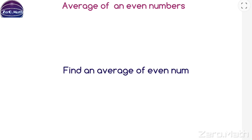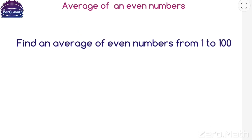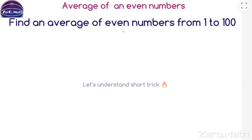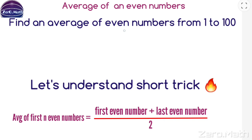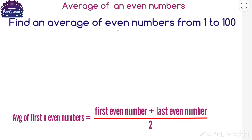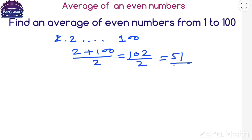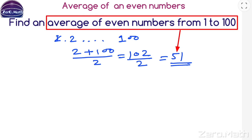This sum is different from the previous one — the previous was about the first 100 even numbers. The short trick here: take the first even number in the series, take the last even number, add them, and divide by 2. Is 1 even? No. So the first even number is 2 and the last is 100. Apply: (2 + 100) / 2 = 102 / 2 = 51. That is the average of even numbers from 1 to 100.